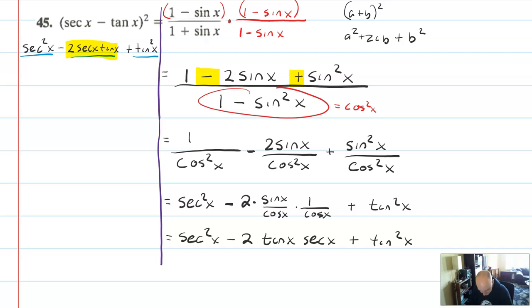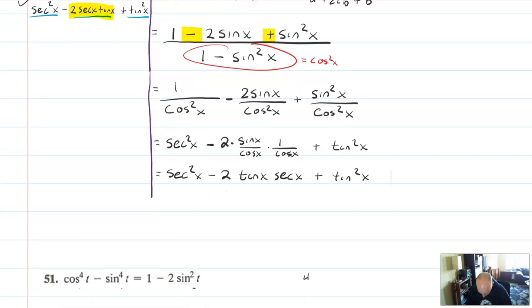I think in this problem it's really nice to work from both sides. At least do that one step on the left side before you go any further. Otherwise you would probably get here and then maybe you'd recognize that that's factorable, maybe you wouldn't. I probably wouldn't, without knowing what the end goal is.